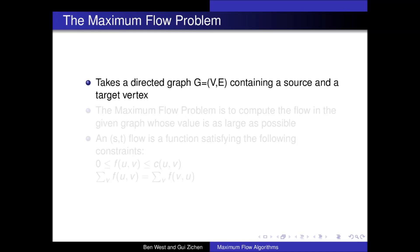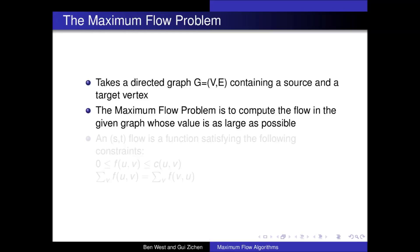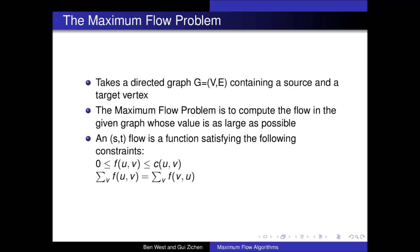In the maximum flow problem, we are given a directed graph with a source and a target vertex, and our goal is to find the maximum flow value that can be pushed along the edges of this graph from the source to the target. A flow is a function satisfying two simple conditions: firstly, the flow between two nodes must be less than or equal to the capacity of the edge between the two nodes, and secondly, the total flow going into any node must equal the total flow coming out of that node.